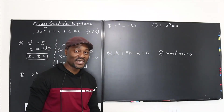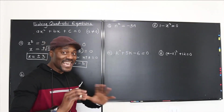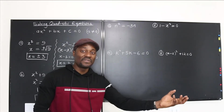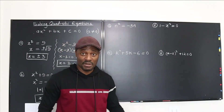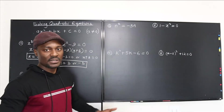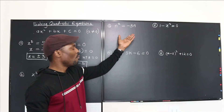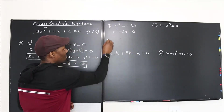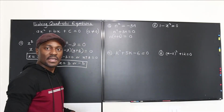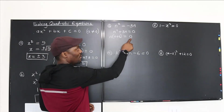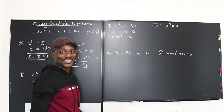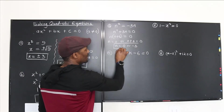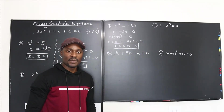A common mistake is dividing both sides by the variable — never do that. Instead, bring everything to one side: n² + 3n = 0. Factor out the GCF: n(n + 3) = 0. Since the product is zero, either n = 0 or n + 3 = 0, giving n = 0 or n = −3. Those are your two answers.